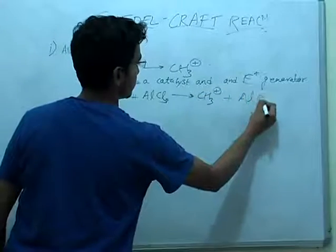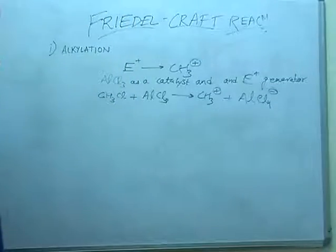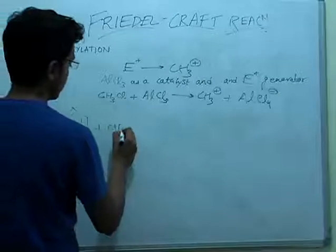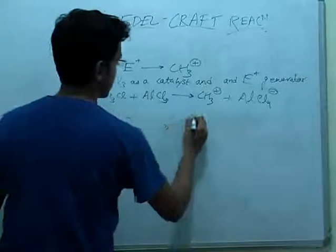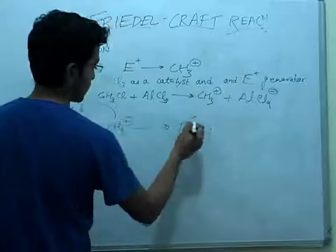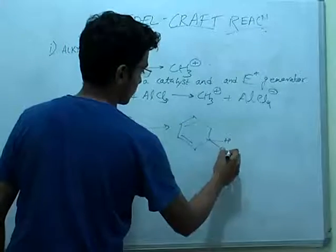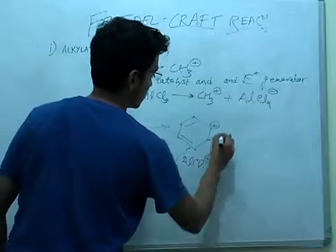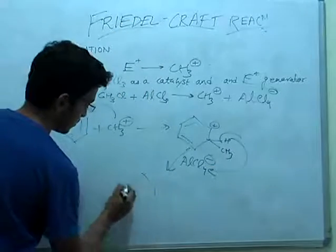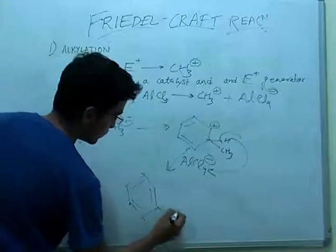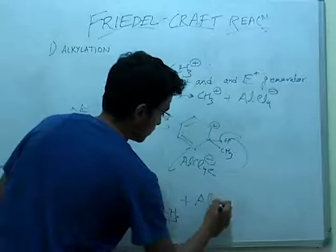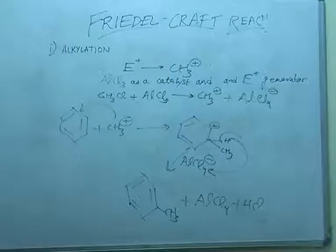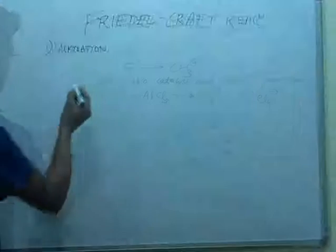This gives us CH3 positive carbocation and the base AlCl4 negative. Using the same mechanism, the CH3 positive reacts with benzene, similarly forming three resonating structures, and then the base extracts a proton and aromaticity is regained, giving us toluene as the product.